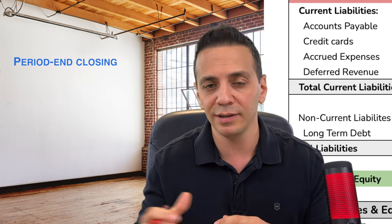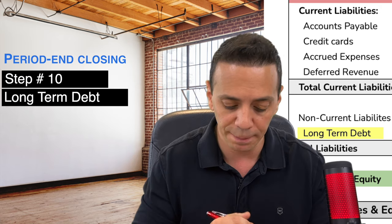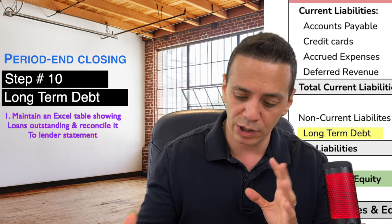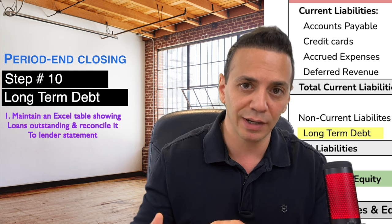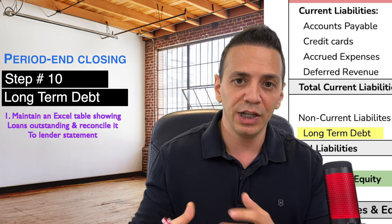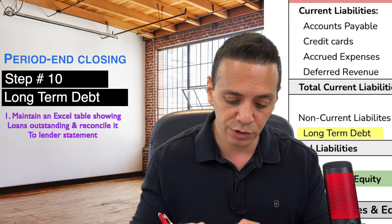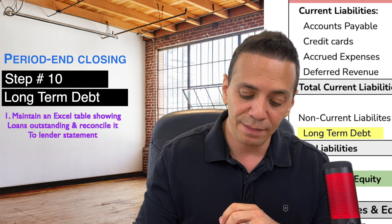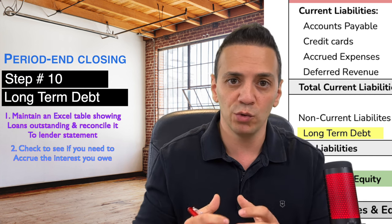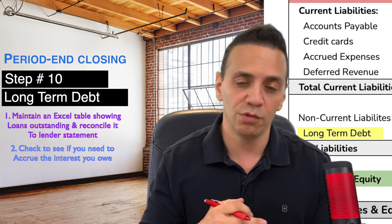Number ten is long-term debt — loans with a term longer than 12 months. Maintain a table outside your ERP showing all outstanding loans and reconcile to statements from the lender, capturing any payments made and recording the journal entry for reduction in cash and long-term liability. Also, if you owe interest on a loan but haven't paid it yet, record an accrual for that interest expense.